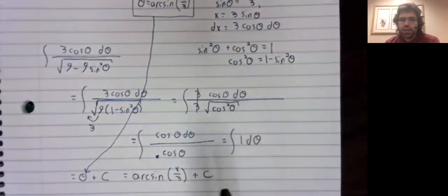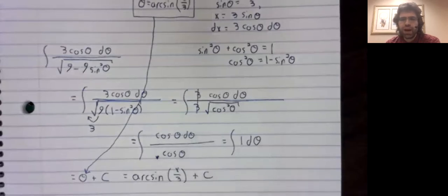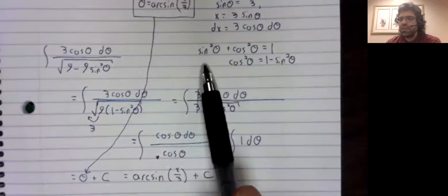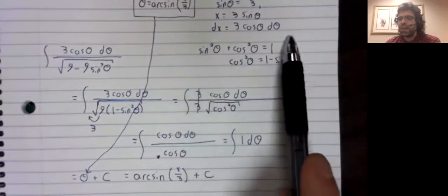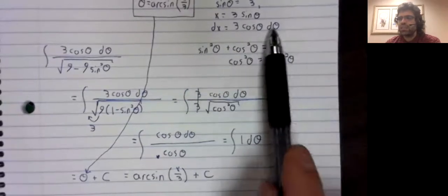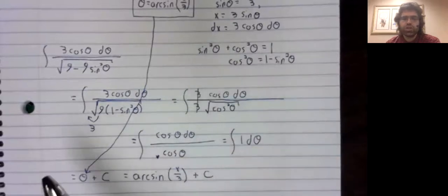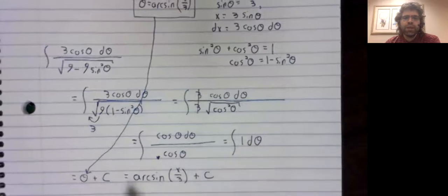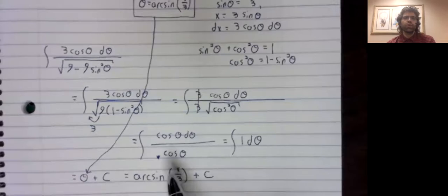Hopefully, the integral we get from this will simplify. In particular, all of the trigonometric substitutions are designed so that the Pythagorean identity can be used as a simplification tool. You get an integral in terms of theta. You take that integral, and then you convert back into your original variable.